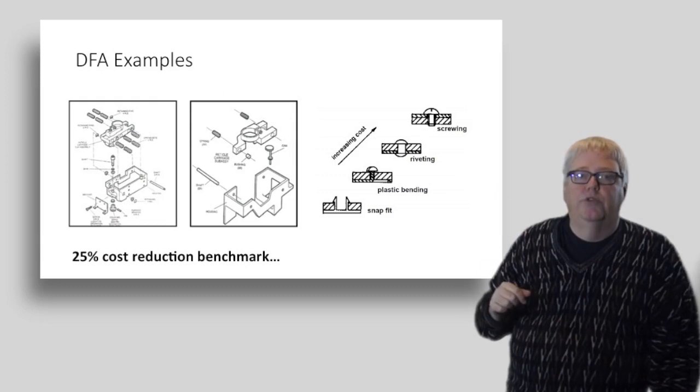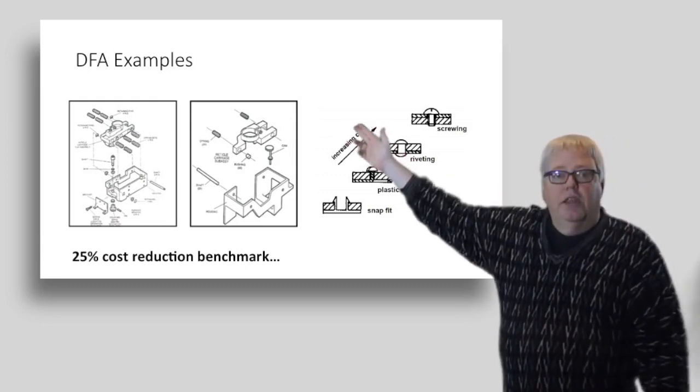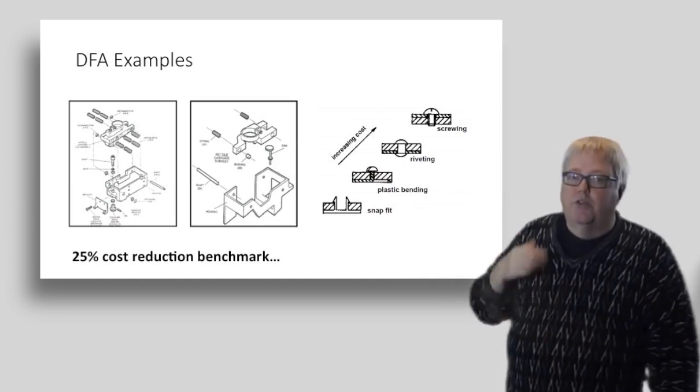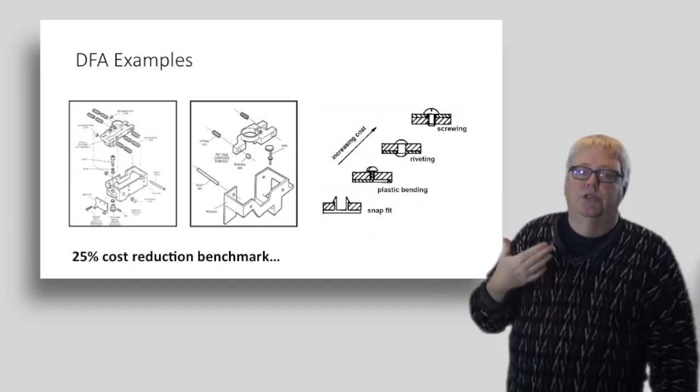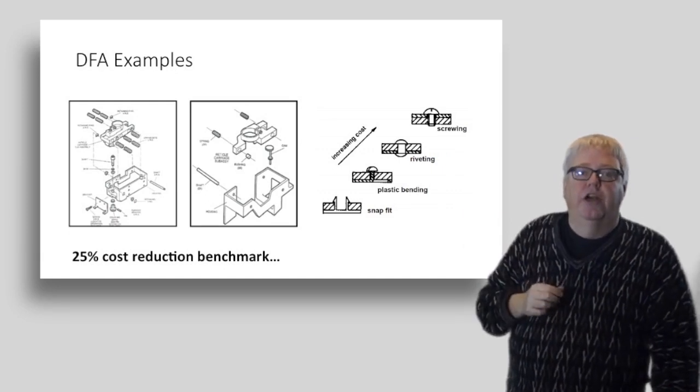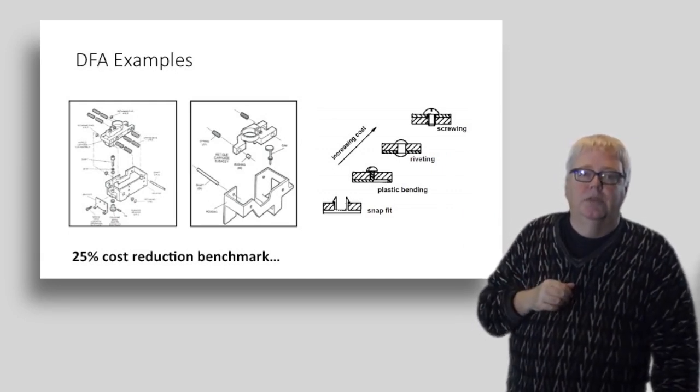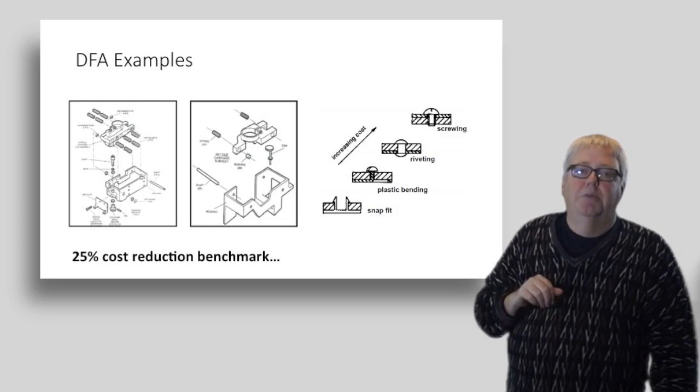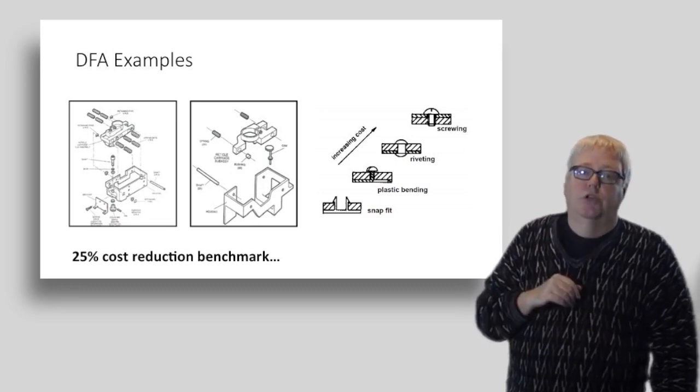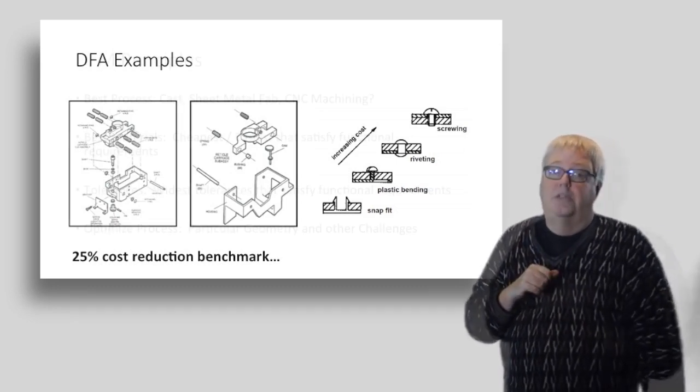Here are some examples. As you can see on the left, multiple parts were combined to make fewer parts for a much simpler to assemble design. On the right, we show various fastener styles and their relative costs. A good benchmark to think about is that the average DFA effort can result in a 25% cost reduction on the part. That's pretty good right out of the box.